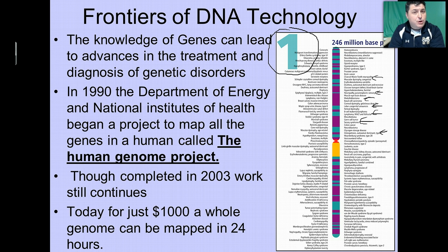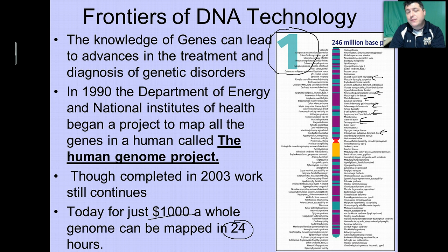The process which took almost 13 years to create a rough map of the human genome can be done today within just 24 hours for about $1,000. A hospital can get a rough map of an individual's genome so that they can search for particular mutations or changes in their genome that might indicate a reason for a particular disease.